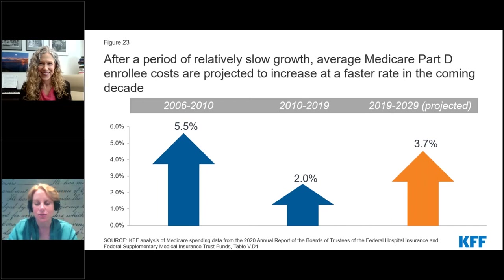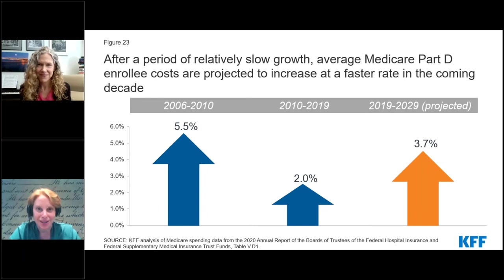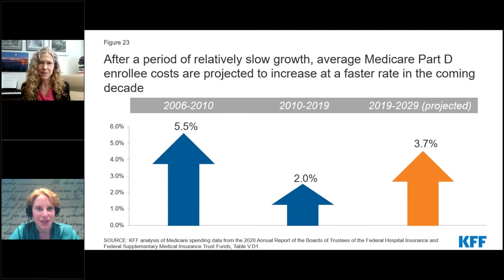I had a follow-up question for you. You've done such an amazing job breaking this down for us. One already came in from our audience about the new Alzheimer's drug. You mentioned the difference between Part B and Part D. The questioner wanted to know how the new Alzheimer's drug might affect people entering the catastrophic coverage threshold. Can you respond to that question?